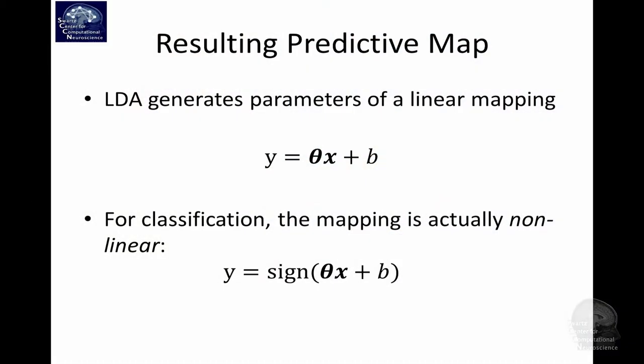It's basically a linear mapping like this. Take the weight vector, inner product with a given trial that projects the trial onto the weight vector, and then add the bias, which gives you a positive number if it's on one side of the plane or negative number if it's on the other side. For classification, what we actually want is we want minus one or plus one as output. That's what the sign function does. It takes the sign of the output. That is actually a nonlinear mapping.